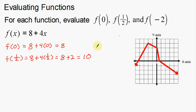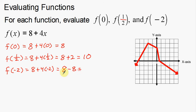Our next one is f of negative two. f of negative two equals eight plus four times negative two. Careful with those negatives — this is going to be eight minus eight. Four times negative two is negative eight, which is going to be zero. So that is evaluating using function notation: f of zero, f of one half, and f of negative two.